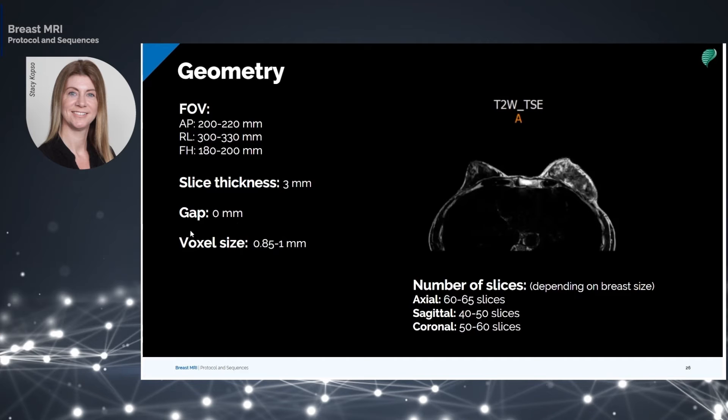The voxel sizes are about 0.85 to 1 millimeter, and the number of slices also depends on the size of the patient's breast.